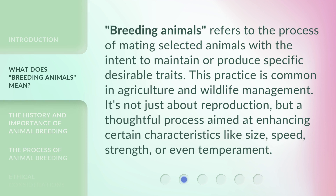Breeding Animals refers to the process of mating selected animals with the intent to maintain or produce specific desirable traits. This practice is common in agriculture and wildlife management. It's not just about reproduction, but a thoughtful process aimed at enhancing certain characteristics like size, speed, strength, or even temperament.